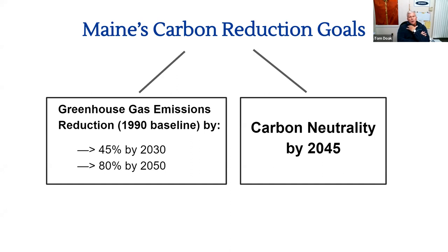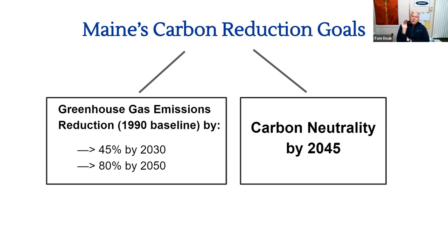The governor announced carbon reduction goals for Maine a couple of years ago, and forests are a major part of this. There are actually two goals. One is to reduce actual emission levels: a 45% reduction from 1990 levels by 2030, and an 80% total reduction from 1990 levels by 2050. The companion goal is to be carbon neutral by 2045 — meaning whatever does go into the air is offset by something else.